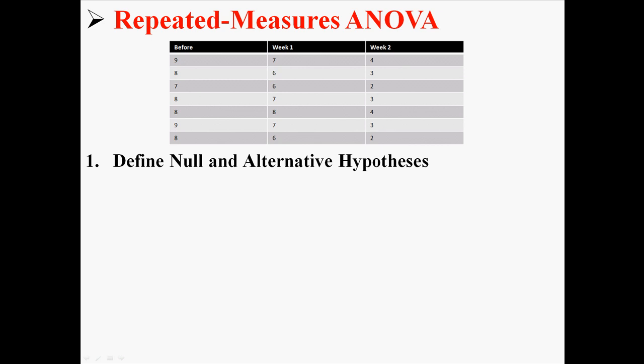So let's start with step one, defining the hypotheses. Our null hypothesis is that all three groups will be equal, that before, week one, and week two will be equal to one another. And H1 is that not all groups will be equal, that there will be a difference somewhere among the groups.